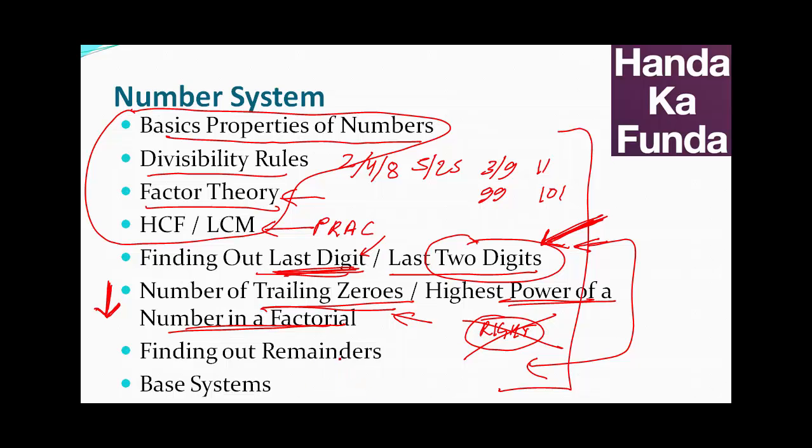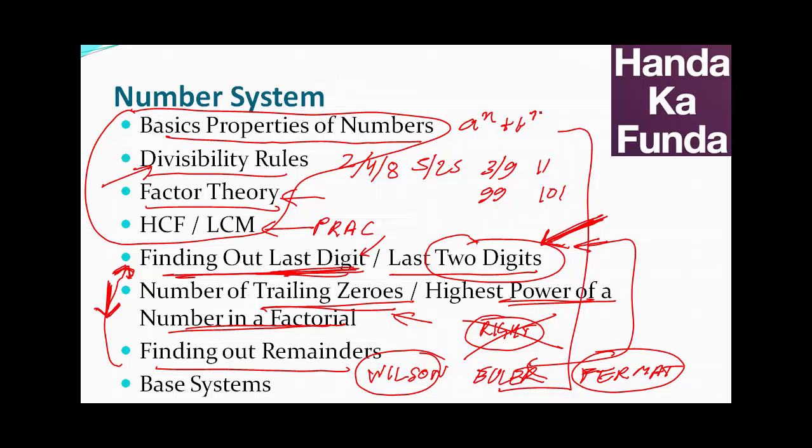Finding out remainders? Again, people spend huge amount of time on this. They learn something called the Wilson's theorem. They learn something called the Euler's theorem. Then they learn applications of the Fermat theorem. All that, to be really honest, is pretty useless. You will never get questions on it. It's not just rare, but I do not remember a single time an application of Wilson's theorem was asked, or an application of Fermat theorem was asked. All you need to do to find out the remainders is use some basic concepts of cyclicity that you would have learnt here in finding out the last digit, or some of the divisibility rules that you would have learnt earlier, or maybe something like a to the power n plus b to the power n. Is it divisible by a plus b or not? Some of those very basic formulas, very basic applications are used in finding out remainders. Knowing Wilson's is nice, but not required.